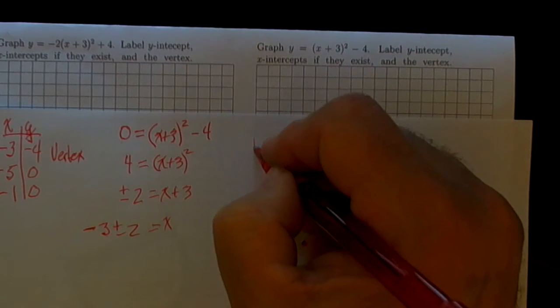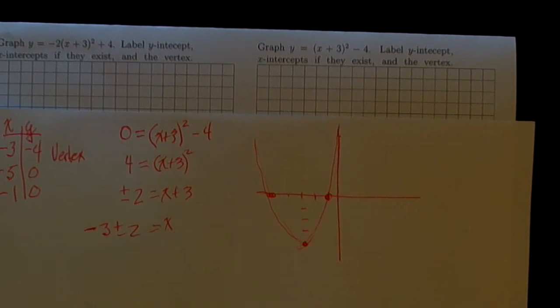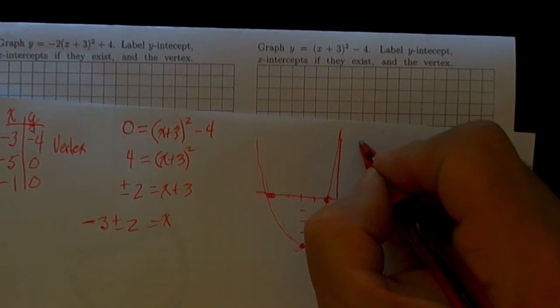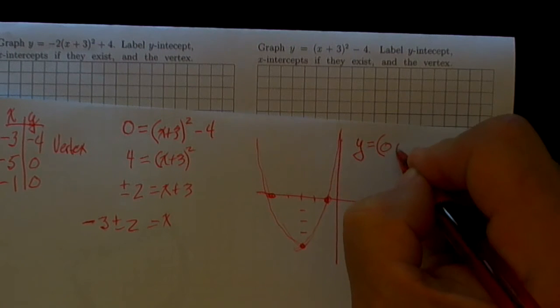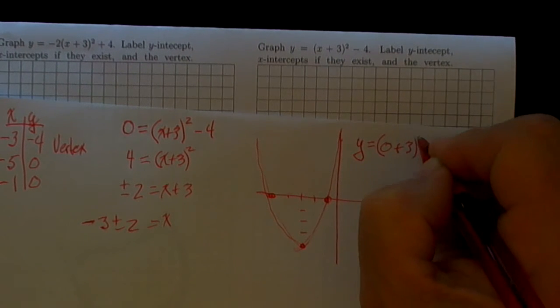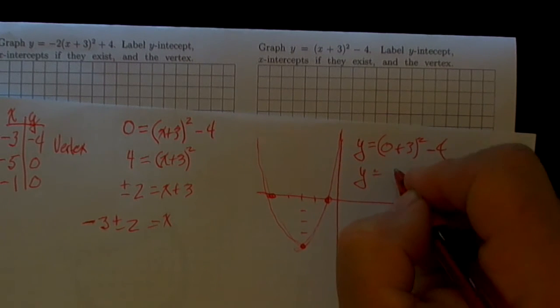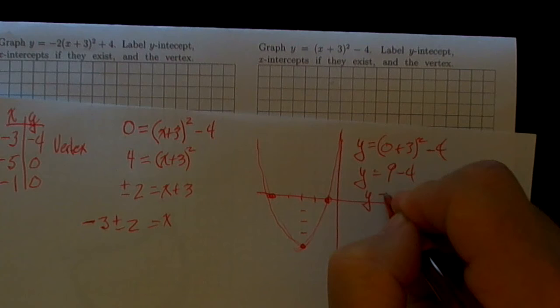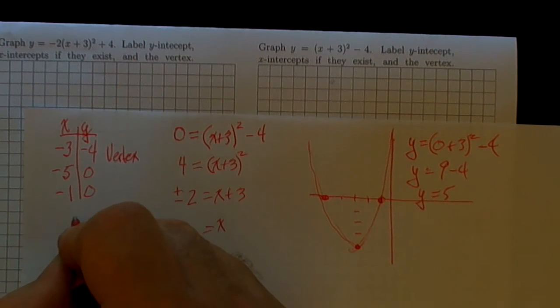Now the last thing we've got to do is find where that crosses the y-axis. That's easy to do. We just need to find y when x = 0. That's (0 + 3)² - 4, so y = 9 - 4 = 5. The other point we've got is the y-intercept at (0, 5).